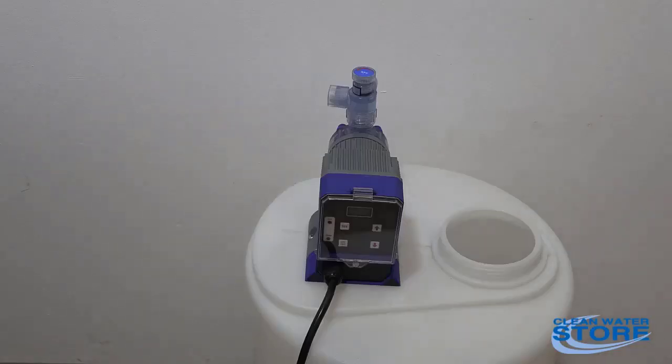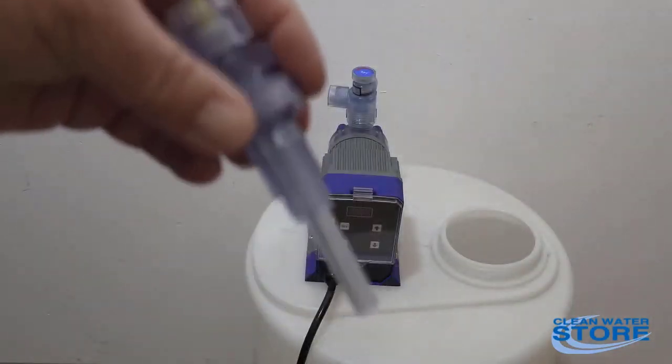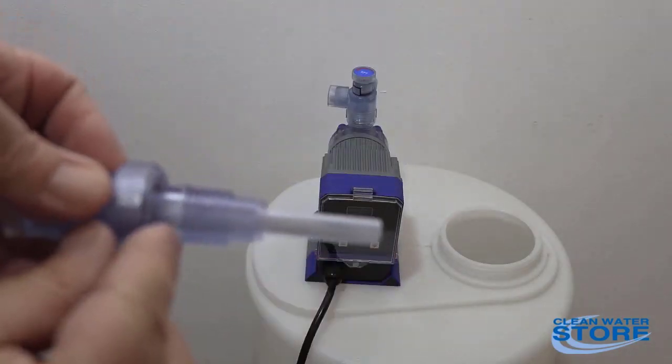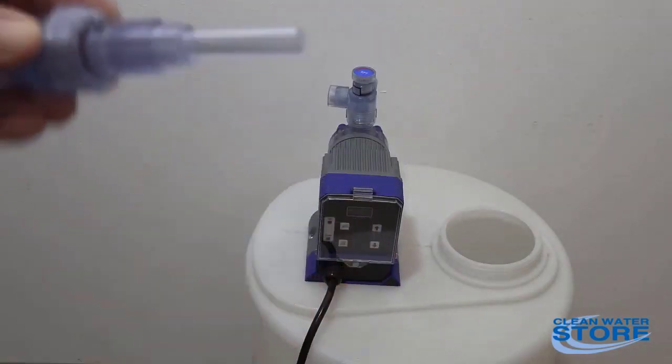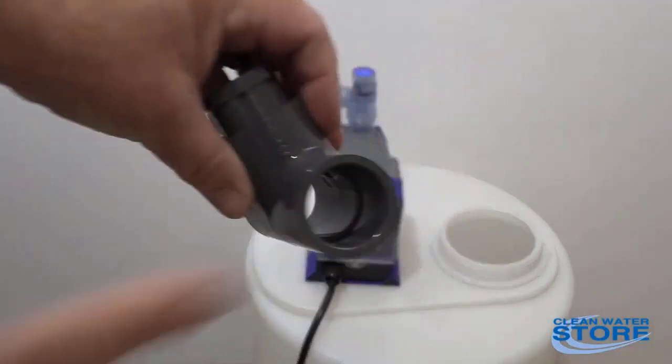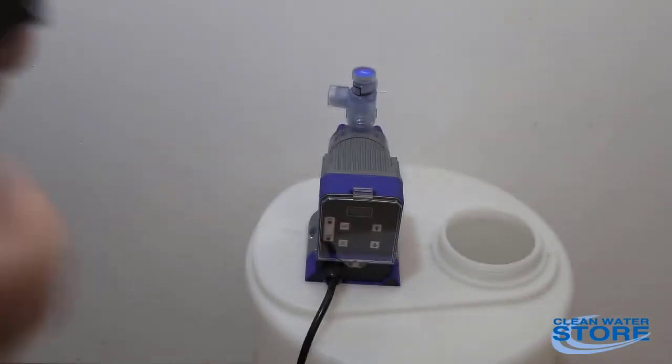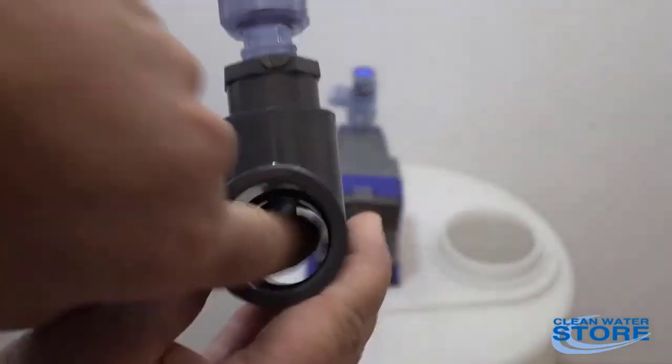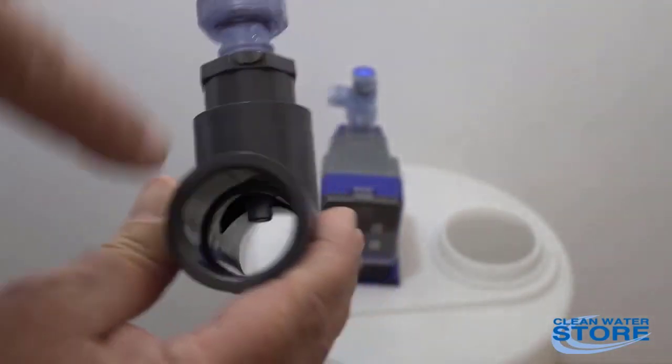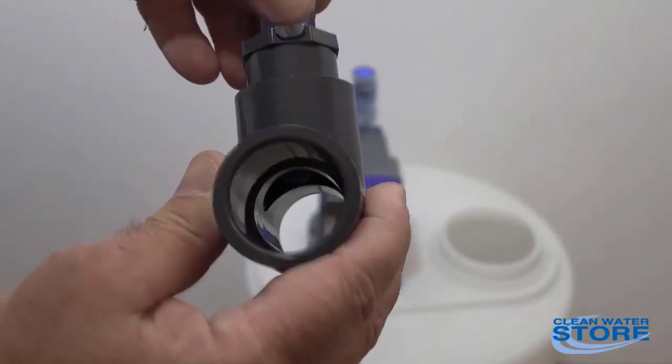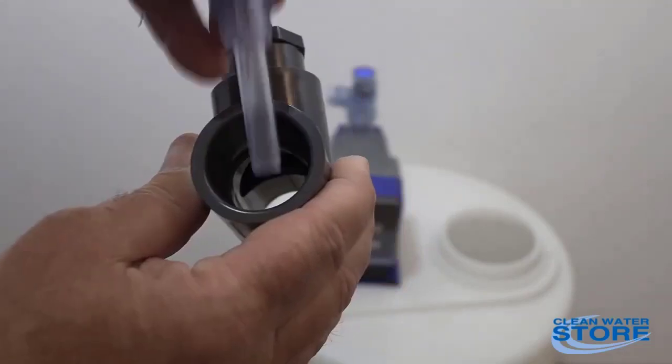Now we're going to install our injection check valve. These injection check valves are actually made for up to a four inch T. We recommend on these, if you have a three-quarter system, go ahead and adapt up to a one inch T with one of these inserts. What you end up with is this probe directly in the water line here as your water is flowing by. You definitely want that. It can be up a little higher, as long as it'll drip down into it. It can be close to the top or down close to the bottom.